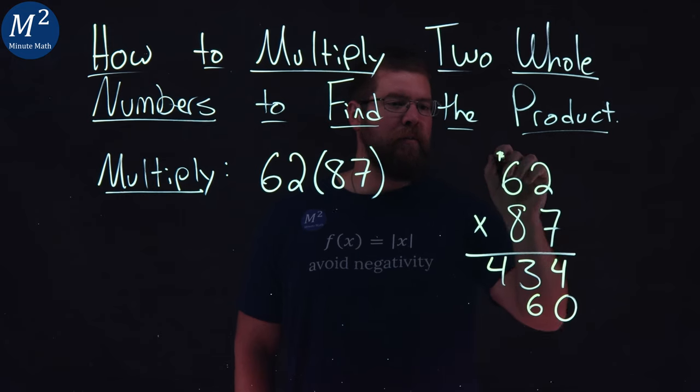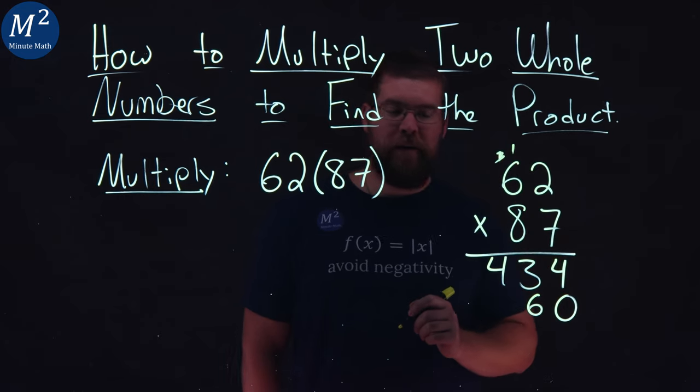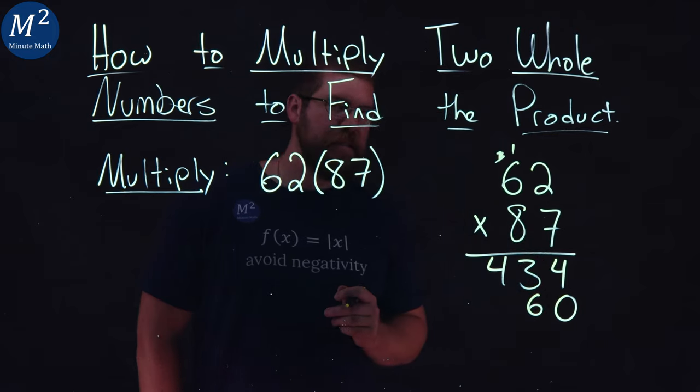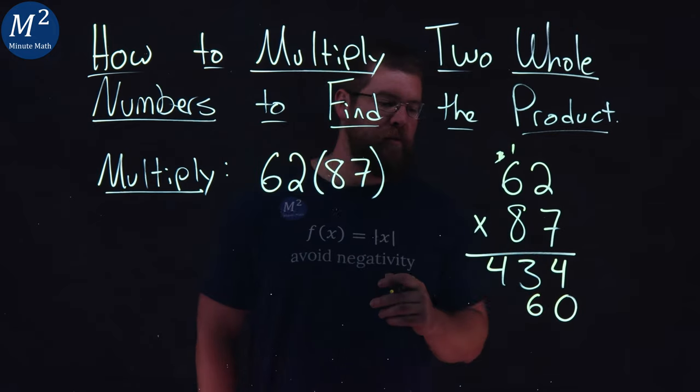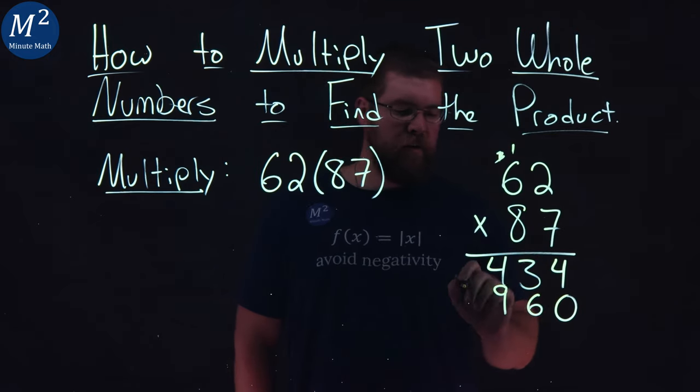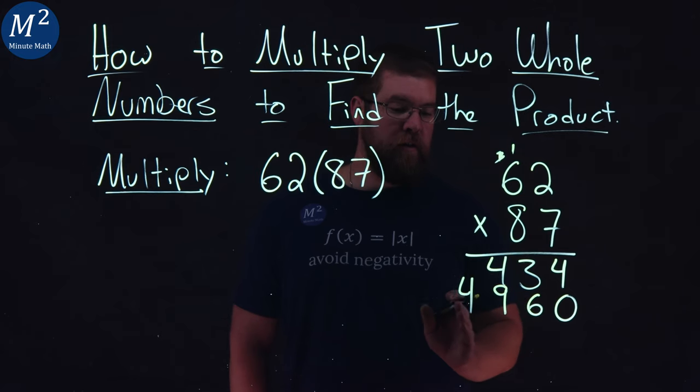We have a six here, carry the one. Then eight times six is 48 plus one gives me 49. Nine goes here and four goes there in the thousands place.